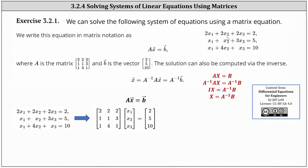Looking at the first equation, the first row of matrix A, the coefficient matrix, is 2, 2, and 2. The second row from the second equation is 1, 1, 3, and the third row from the third equation is 1, 4, 1. So matrix A times vector x equals vector B from our system of equations is shown here below.